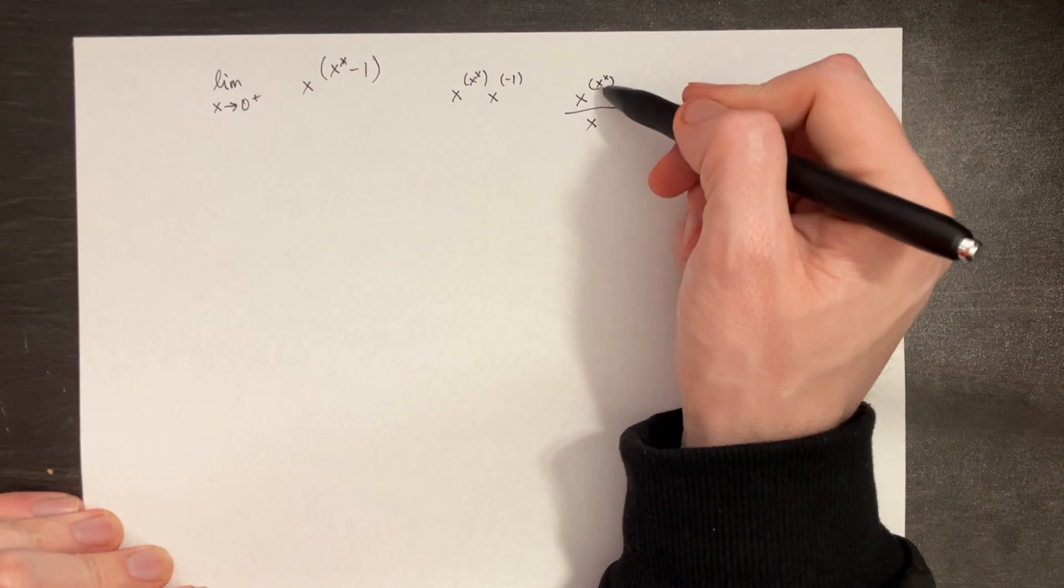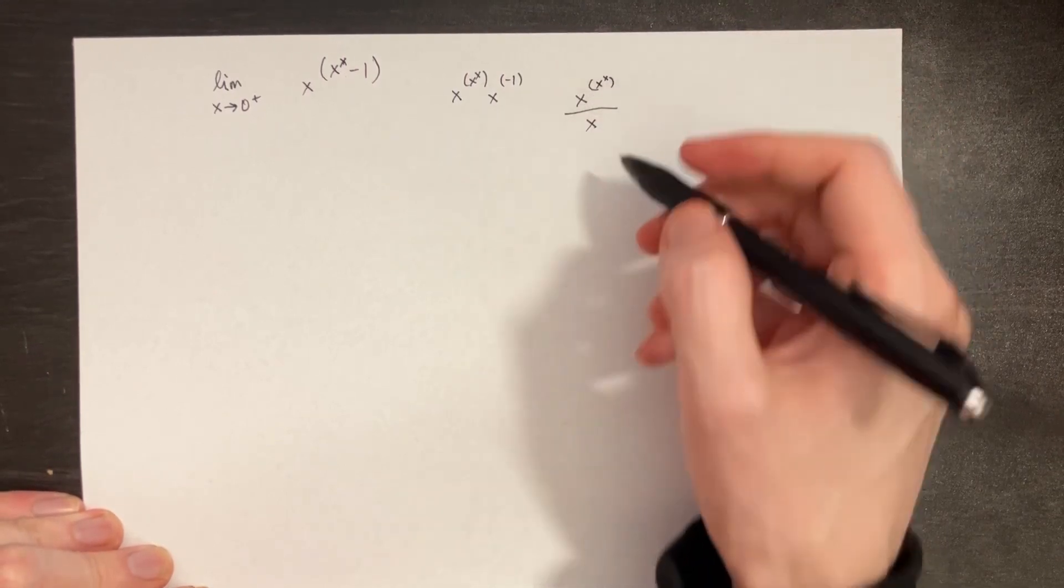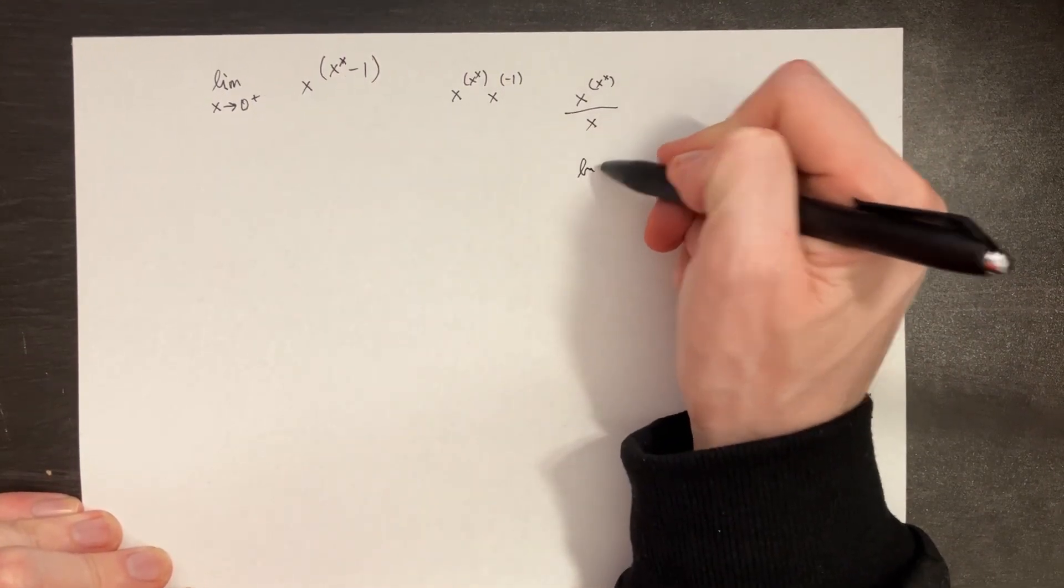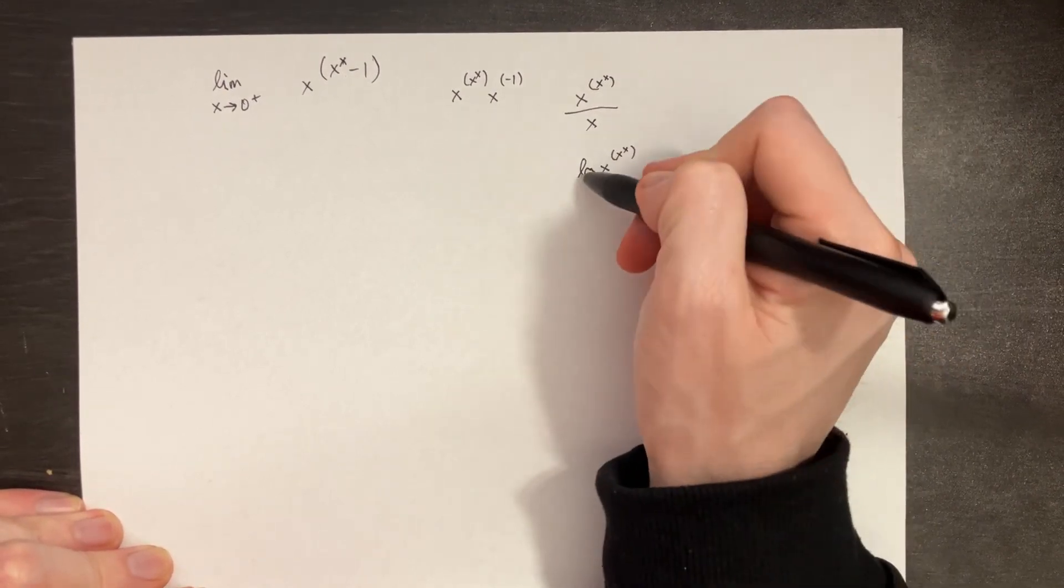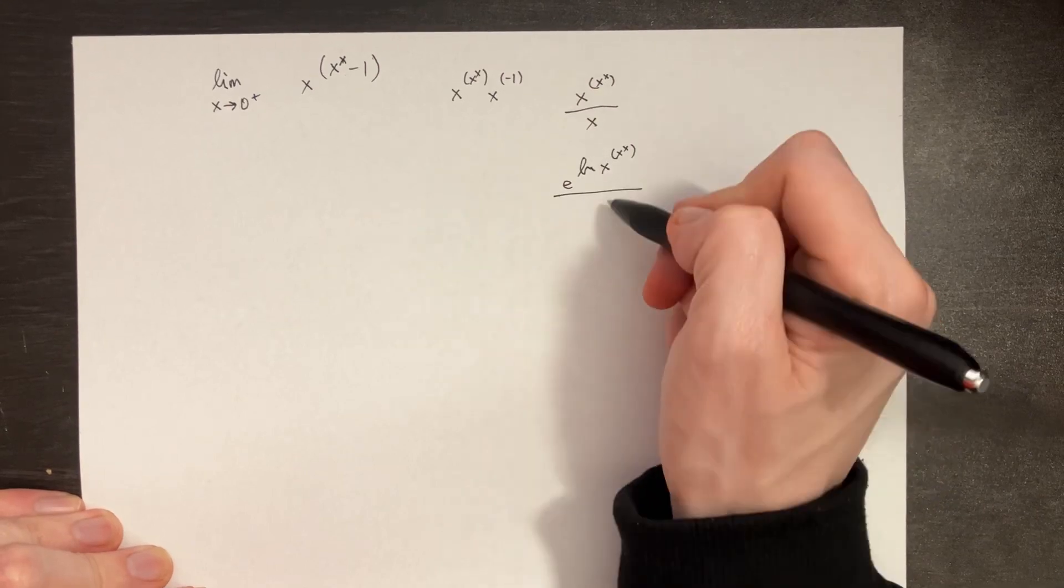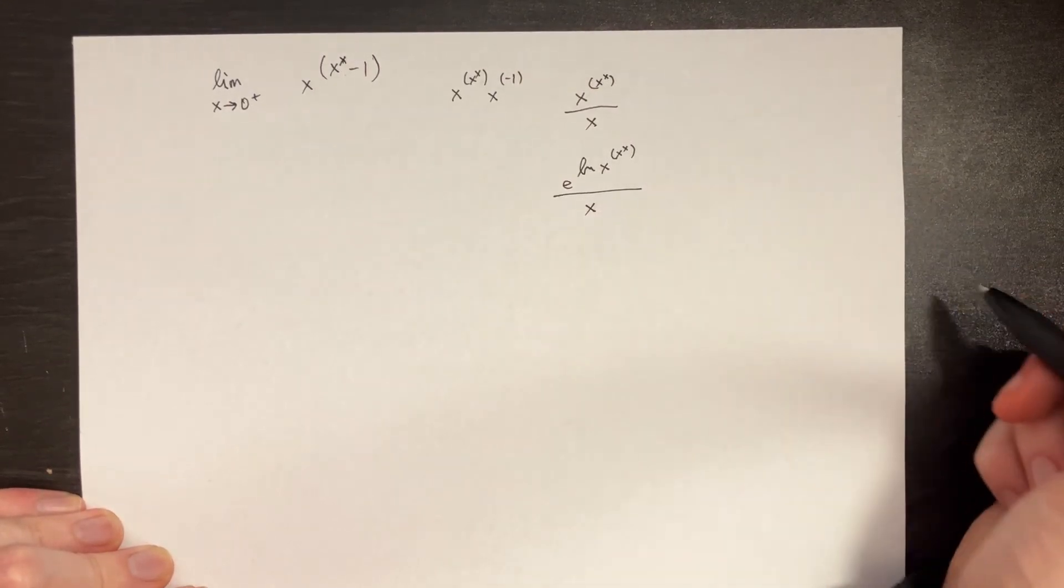Now from here, what we'd like to be able to do is take the ln of the top side. So the ln of this whole x to the x to the x. We know that if we take the ln, we have to cancel it out by adding an e here, and then we'll put that over x.